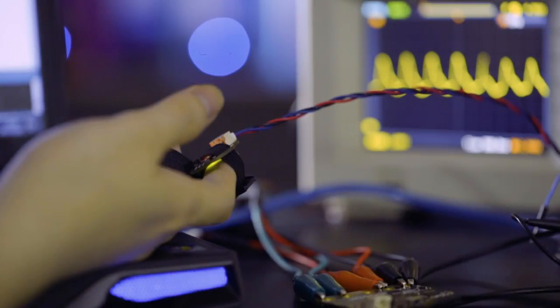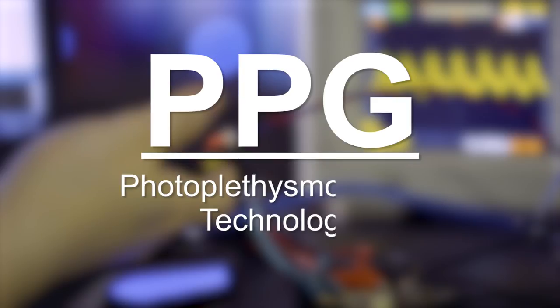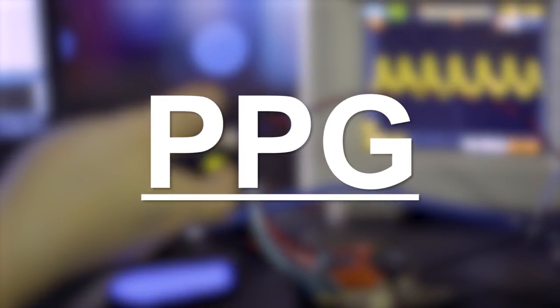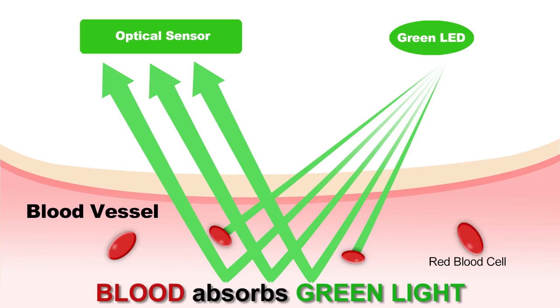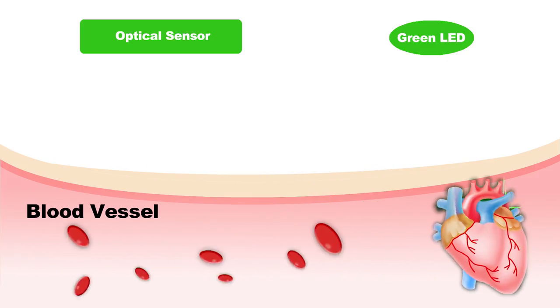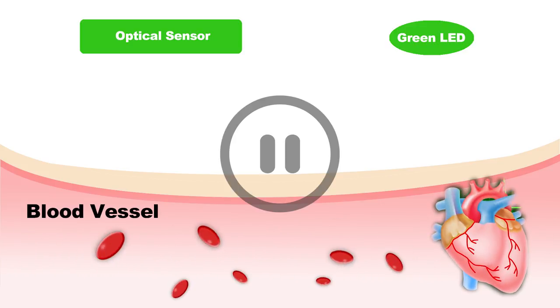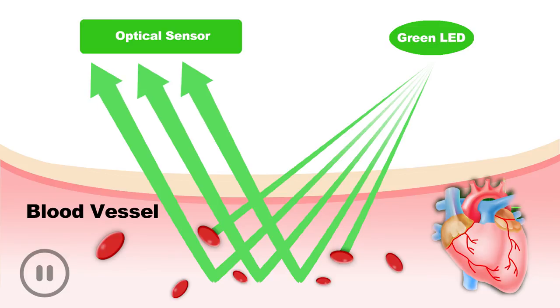The optical heart rate sensor is based on PPG (photoplethismography) technology, which may sound horrible to most of us. However, it is based on a very simple fact: blood absorbs green light. Each time our heart beats, it pumps a blood pulse into vessels. As a result, more green light is absorbed.